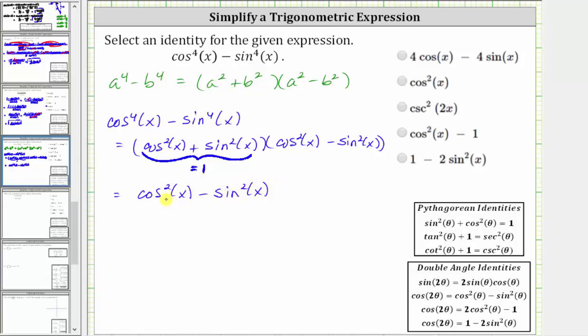We could factor this again as a difference of squares, but instead, let's write this in terms of one trig function rather than two, which means we can perform a substitution for cos^2(x) or sin^2(x).